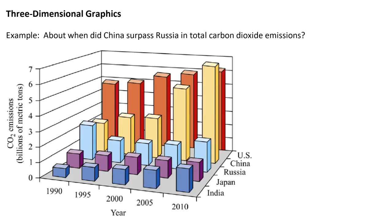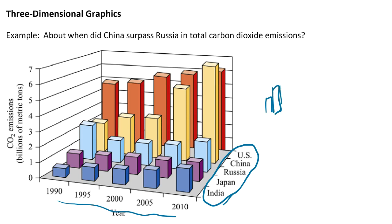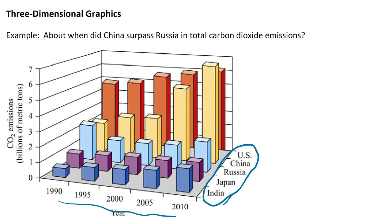In this video we're going to continue talking about graphics in the media, starting with three-dimensional graphs. 3D graphs are pretty easy to do nowadays with computer software, which can easily give graphs a 3D appearance. This allows us to show a lot more data — now we can have years and different categories without having to stack bars next to each other, because the more bars we stack the more confusing it gets.